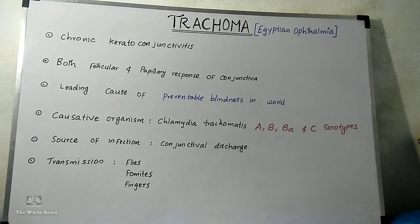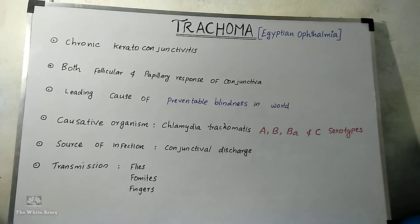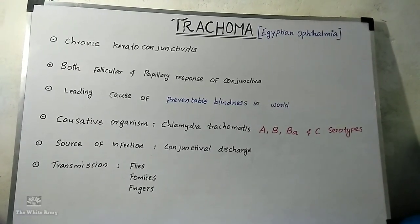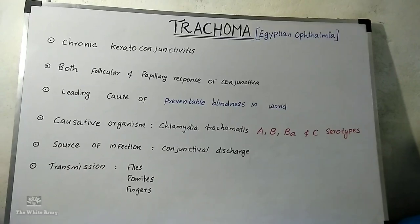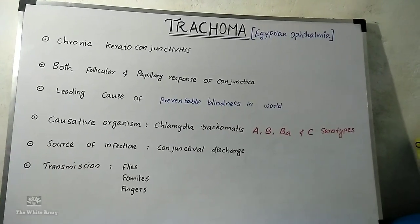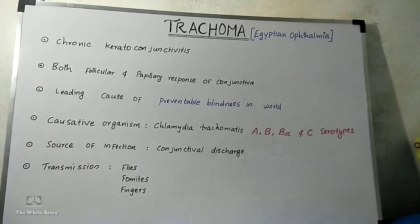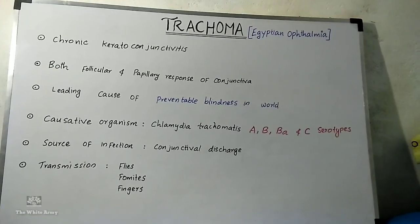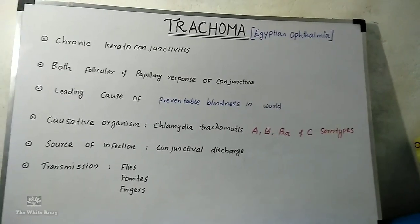Trachoma, also known as Egyptian ophthalmia, is a chronic form of conjunctivitis. It is characterized by both follicular and papillary response of the conjunctiva, and it is a leading cause of preventable blindness in the world.